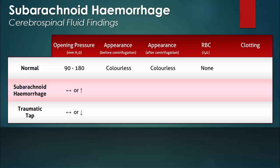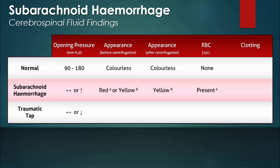The normal appearance of the cerebrospinal fluid is clear and colorless. With a subarachnoid hemorrhage, the cerebrospinal fluid can be reddish due to the presence of erythrocytes, or yellowish, referred to as xanthochromia, due to the presence of bilirubin.